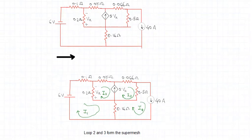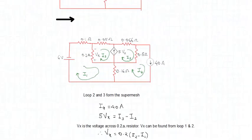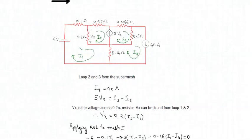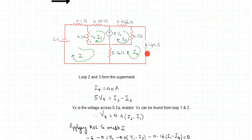Before starting KVL, let us get some values directly from the circuit. Loop 2 and loop 3 form a super mesh. There is a current source here — the current in that branch is assigned as i4. We can directly say i4 equals the current source value of 40 amperes, since 40 amperes is the current flowing in that branch.